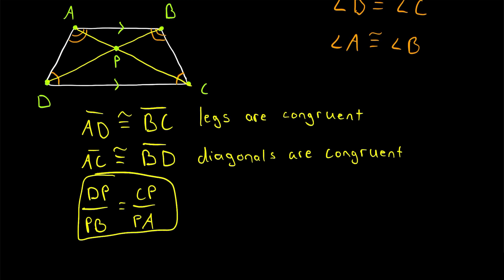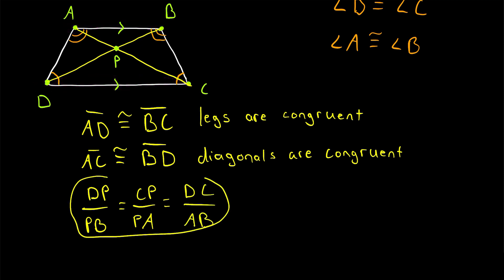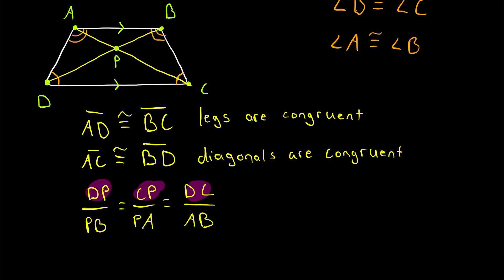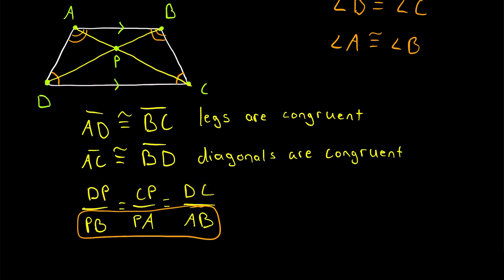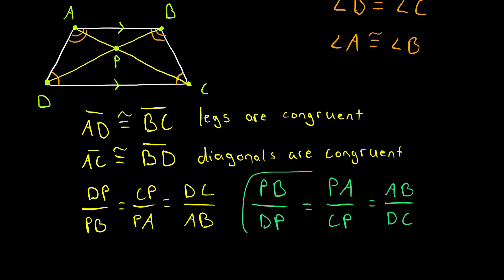These two ratios are also equal to the ratio of the bases — the ratio of DC to AB. If you're familiar with similar triangles, you might notice that what we're really saying is that triangle DPC is similar to triangle BPA. Notice that in the numerators we have base DC and the segments that intersect base DC, while in the denominator we have base AB and the segments that intersect base AB. We could also flip them all to have AB and its intersecting segments in the numerator.